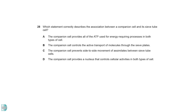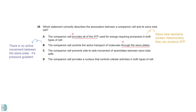A is incorrect because sieve tube elements contain mitochondria — they can produce ATP. B is wrong because there is no active movement between the sieve plate; a pressure gradient mainly drives the movement. C is wrong because a companion cell does not have that function. D is the answer: sieve tube elements do not have a nucleus.